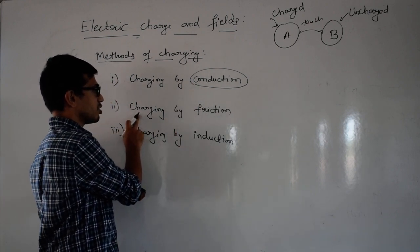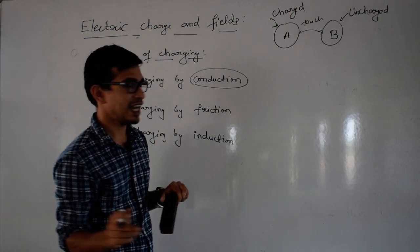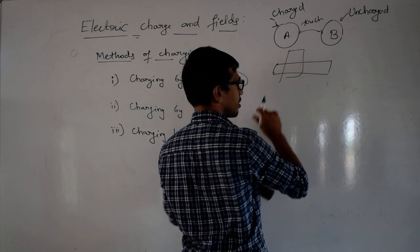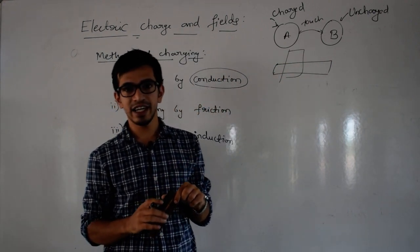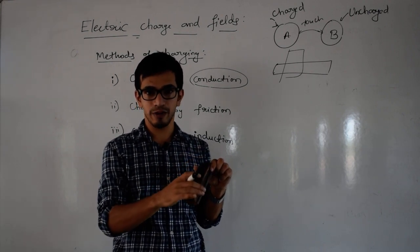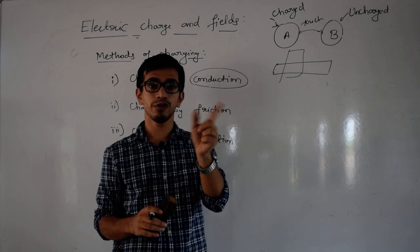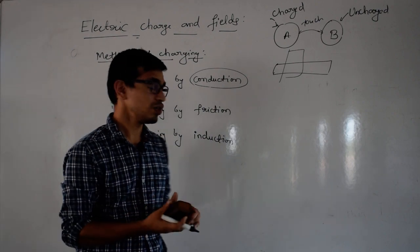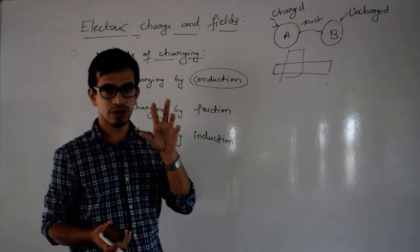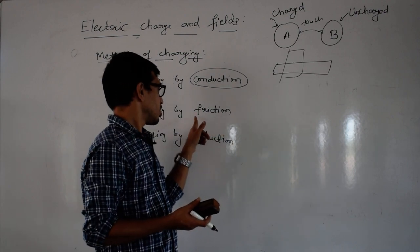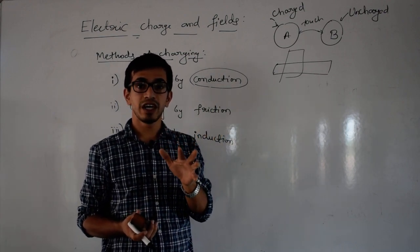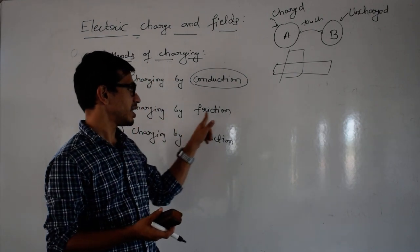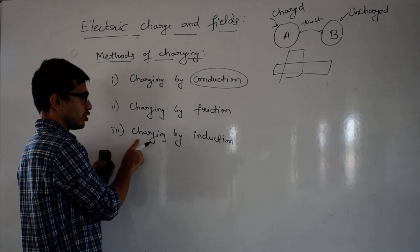Charging by friction: for example, a glass rod rubbed with a silk cloth. By rubbing one object against another, there is a flow of electric charges from one body to another body, so that the body becomes charged. Charging by friction is the method of charging in which uncharged objects are charged just by rubbing them with some other objects.